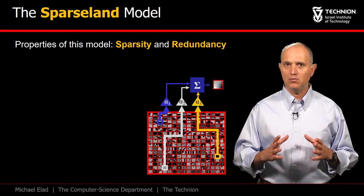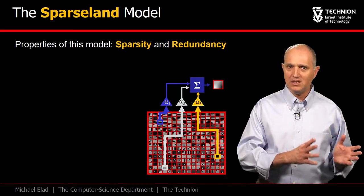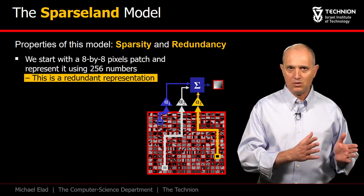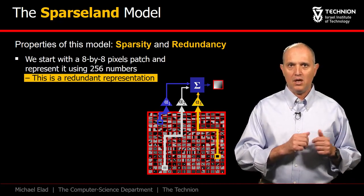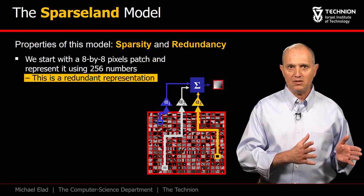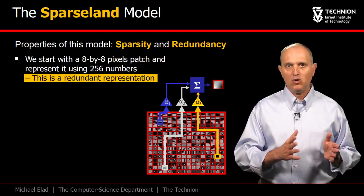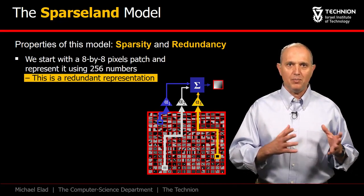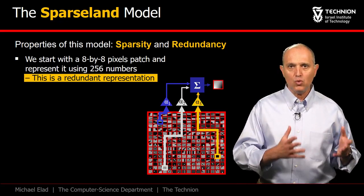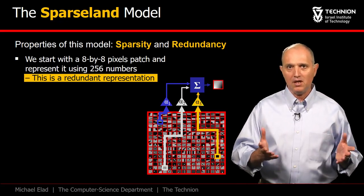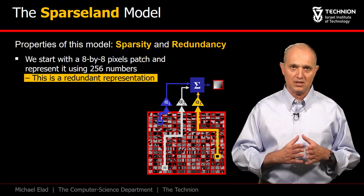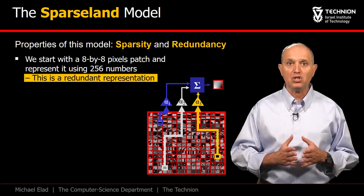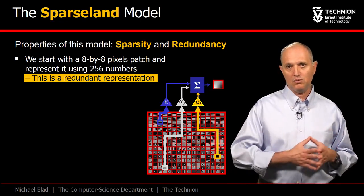Two properties of the Sparsland model are sparsity and redundancy. We have started with a patch that contains 64 pixels, and our model suggests a new description of it as a linear combination of the atoms from the dictionary. Therefore, the new representation is a vector of length 256 carrying the linear combination weights. As such, our representation is clearly redundant, being much longer than the input data we started with.